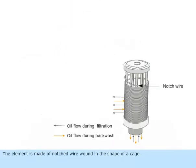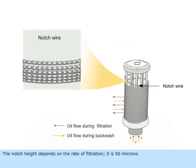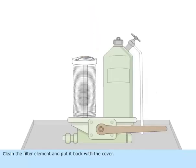The element is made of notched wire wound in the shape of a cage. The notch height depends on the rate of filtration. It is 50 microns. Clean the filter element and put it back with the cover.